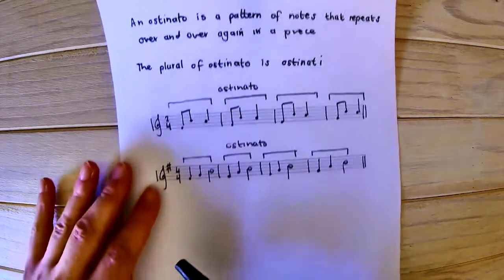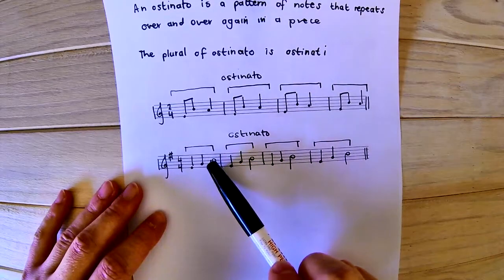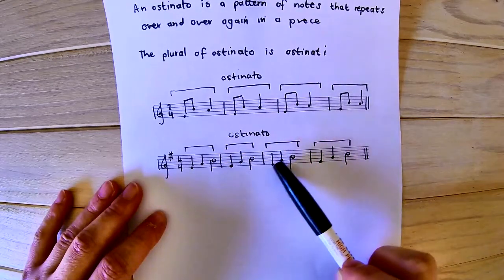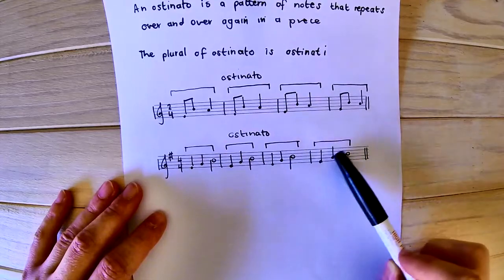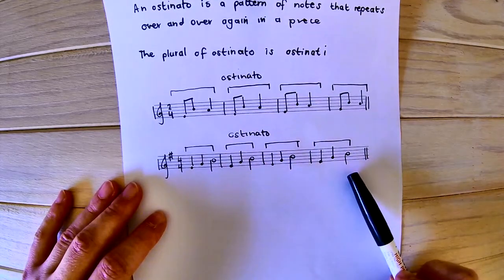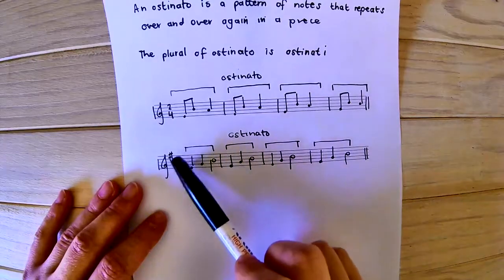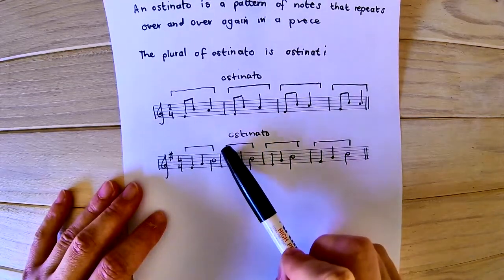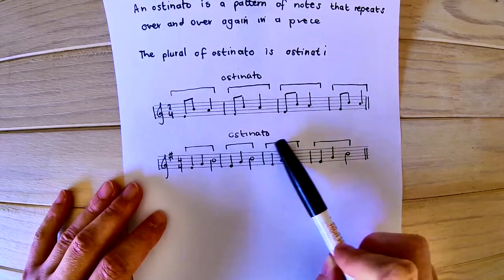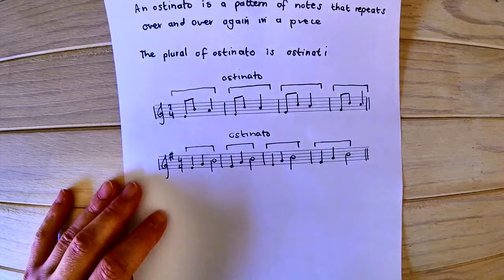In this case, we have two crotchets and a minim, and then again two crotchets and a minim — repeating. They look the same and are written on exactly the same pitches as well. So we need to add our ostinato line-up bracket right there to show that it's an ostinato.